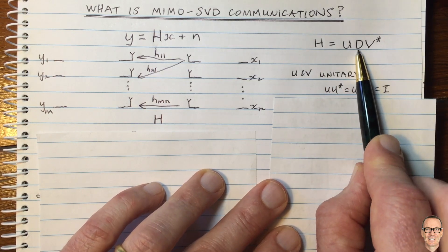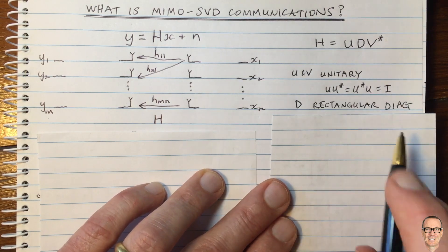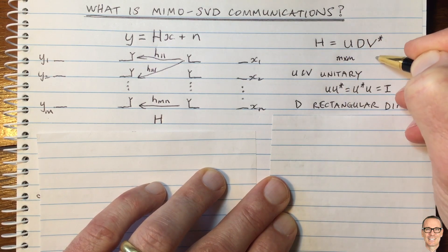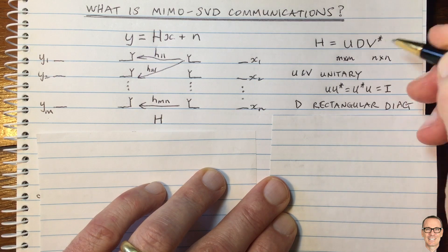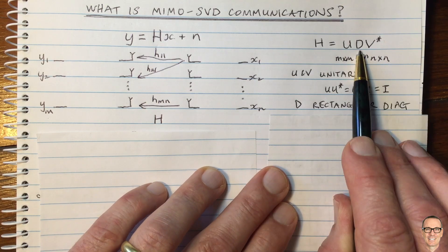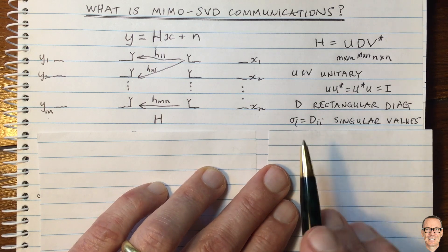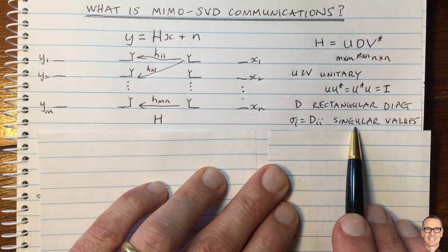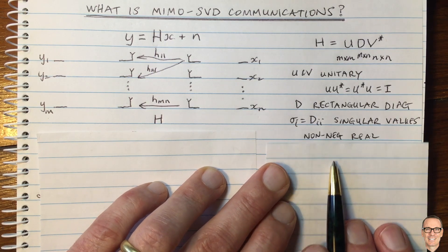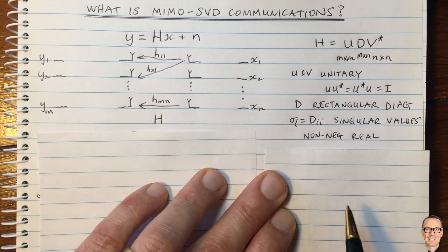Note that D is not going to be a square diagonal — it will be a rectangular diagonal because U is M×M and V is N×N, so D is going to be M×N. This is not a square matrix, but it is called rectangular diagonal. On those diagonal elements are the singular values, which we call sigma_i. These are non-negative and real — that's a property of the singular value decomposition.